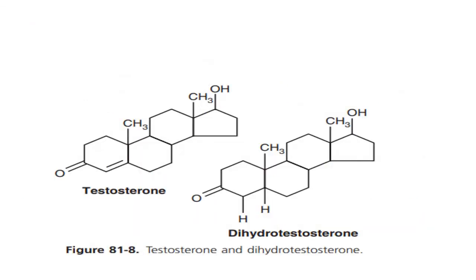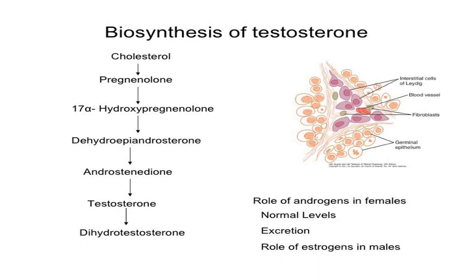In this slide you can compare the structure of testosterone and dihydrotestosterone — the rest of the structure is the same, but two hydrogens have been added, which is why it is called dihydrotestosterone. The steps of synthesis from cholesterol are also shown: cholesterol is converted into pregnenolone, then into 17-alpha-hydroxypregnenolone, then dehydroepiandrosterone, then androstenedione, then testosterone, and finally testosterone is converted into dihydrotestosterone.